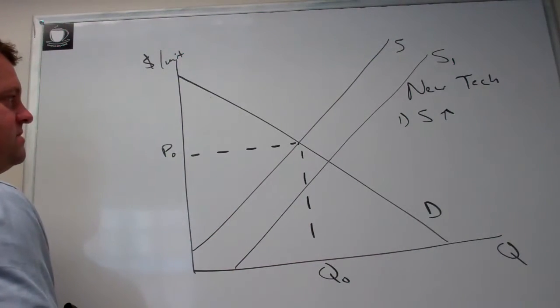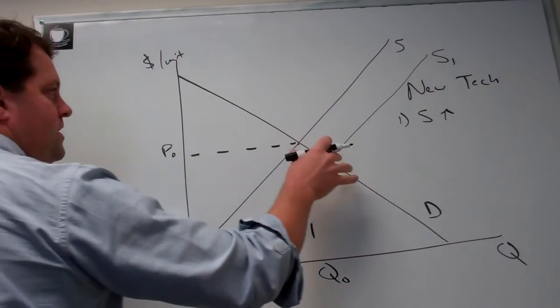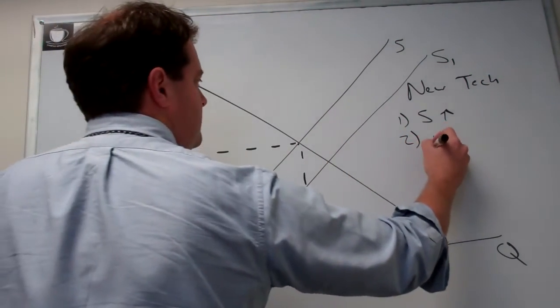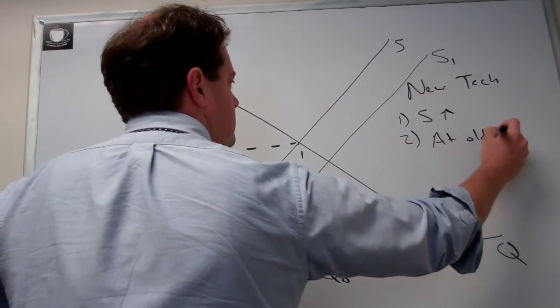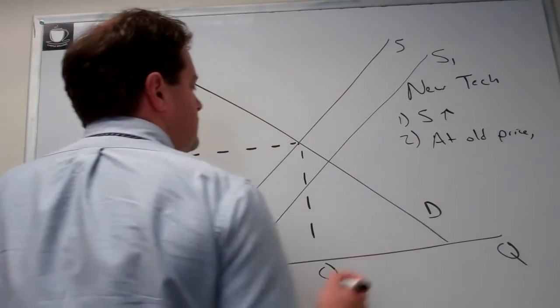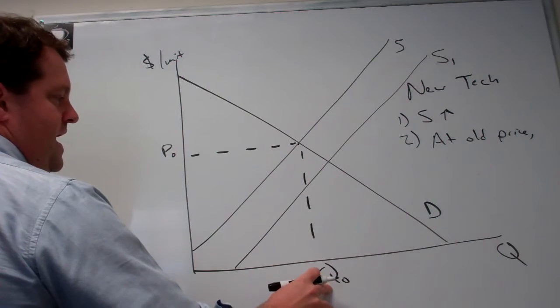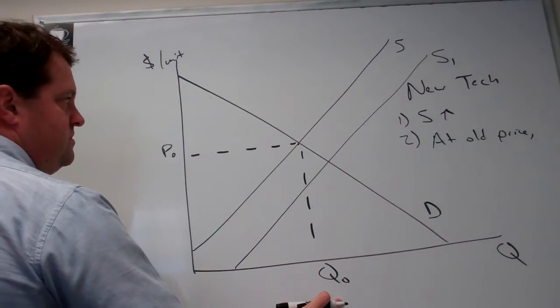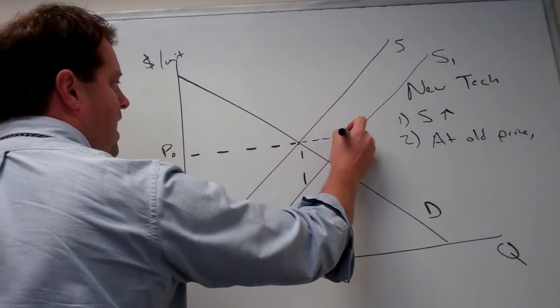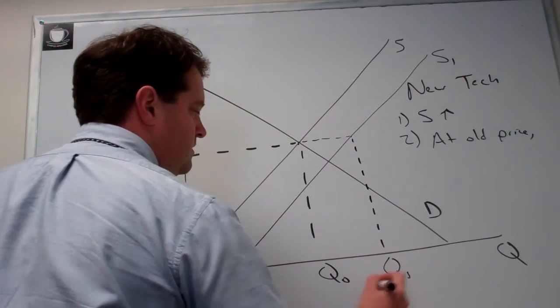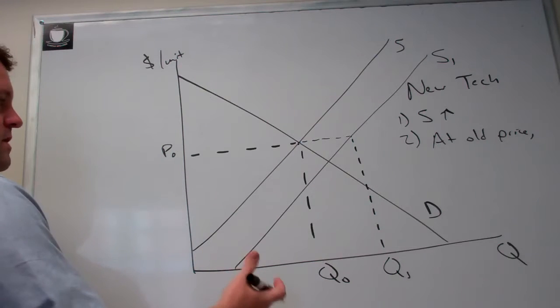Now that we've identified that the supply is going to increase, we're going to have to identify if there's a surplus or a shortage at the old price. So at the old price of P0, the quantity demanded hasn't changed, it's still Q0, but the quantity supplied has increased to Qs.